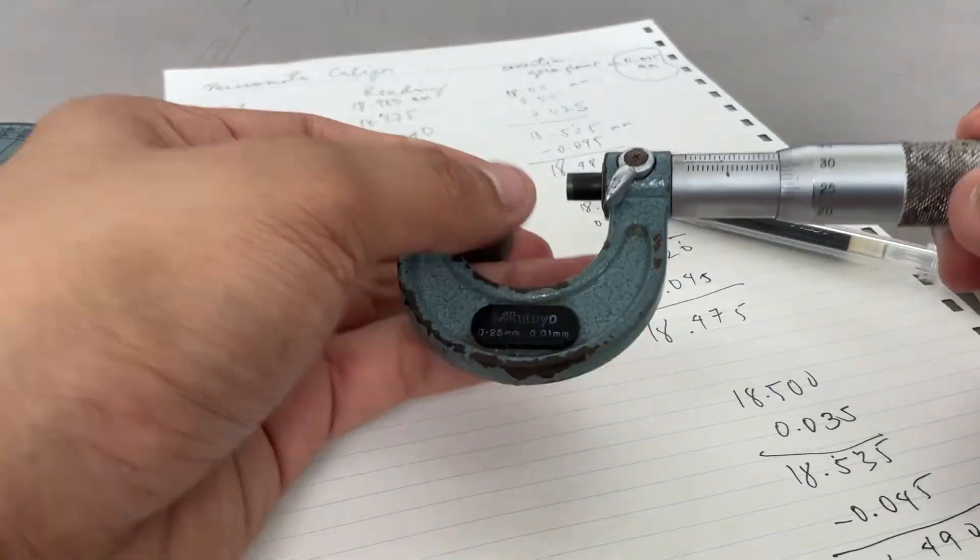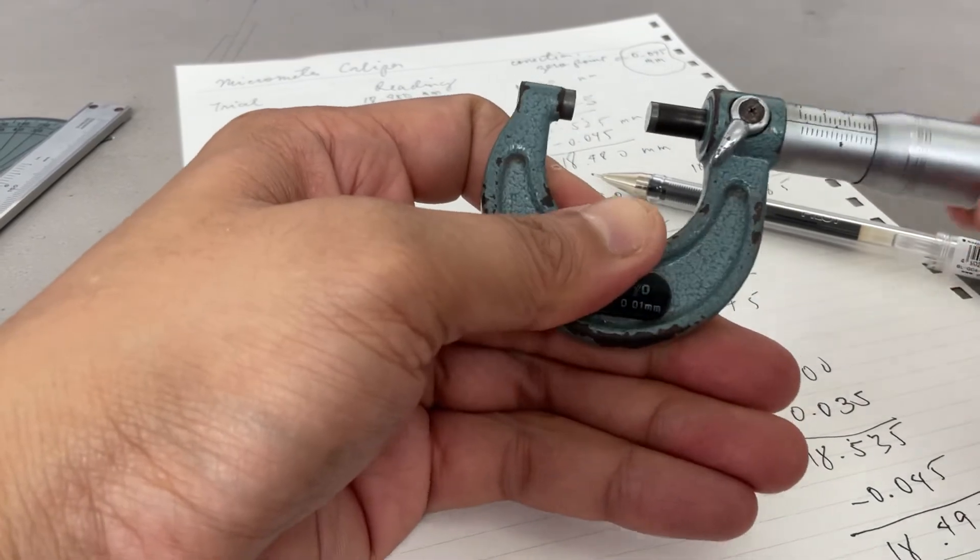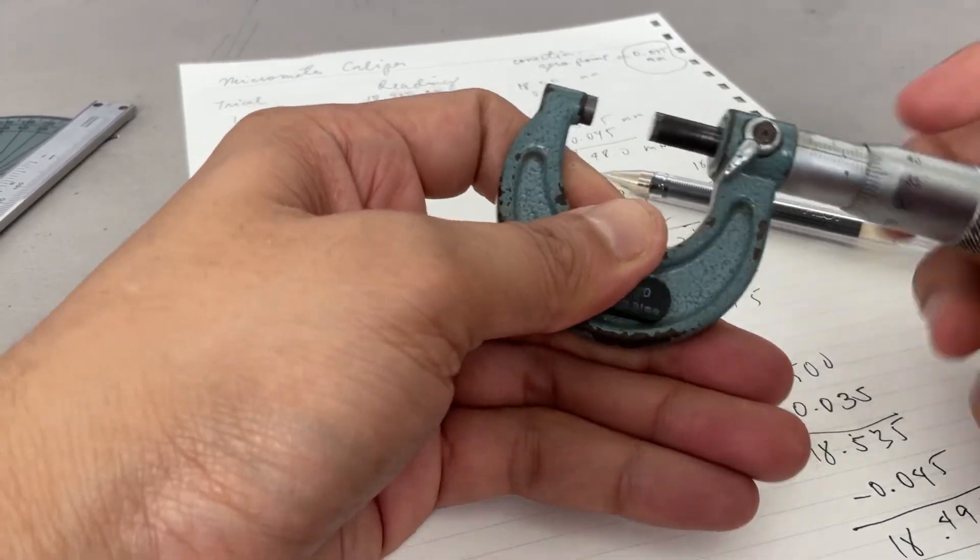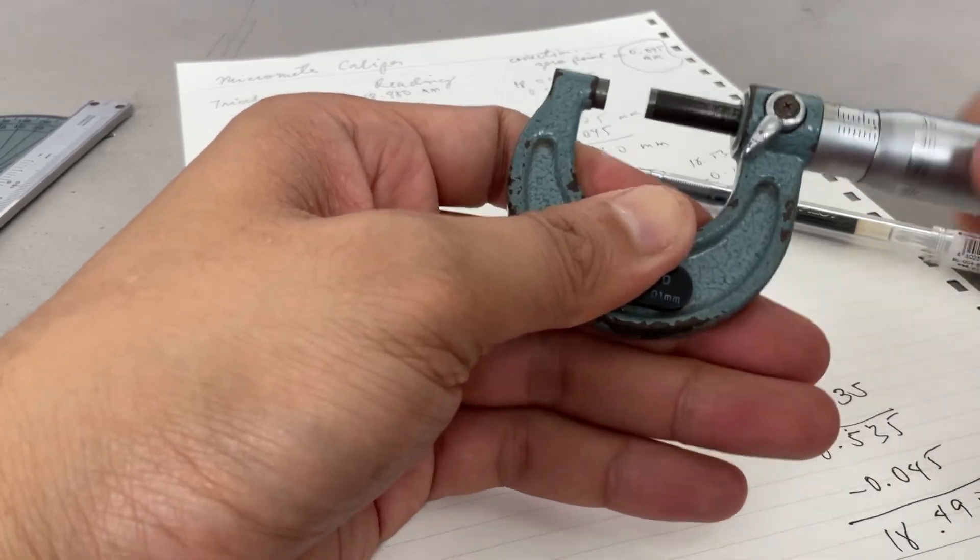But of course, don't forget to deduct the zero. The zero is the reading even if there's no object yet on this part here, in the anvil.